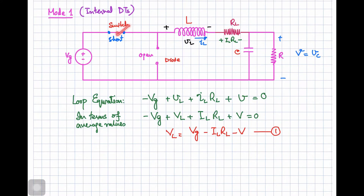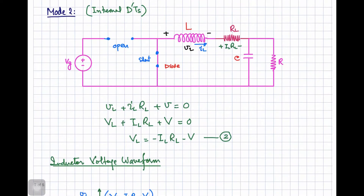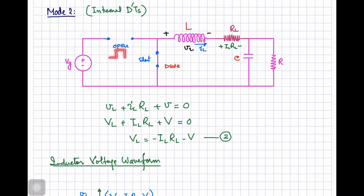In the second mode of operation, the main switch is open and the diode is in the closed state. When the gate voltage is removed, the inductor resists the change in current and acts as a source, so the polarity across the inductor is reversed. Because of this negative voltage, the diode turns on and is represented as a short circuit.